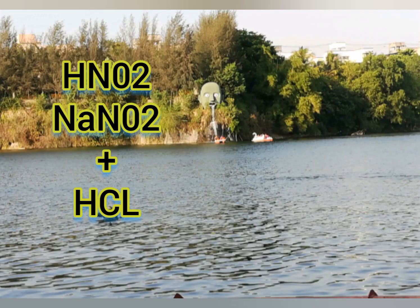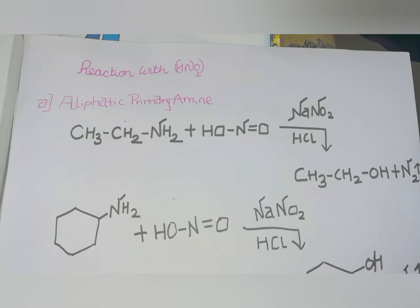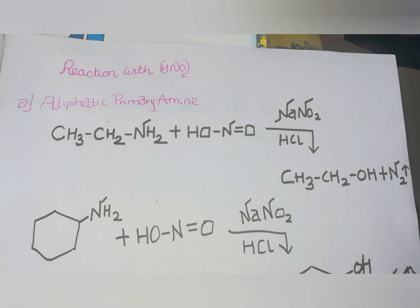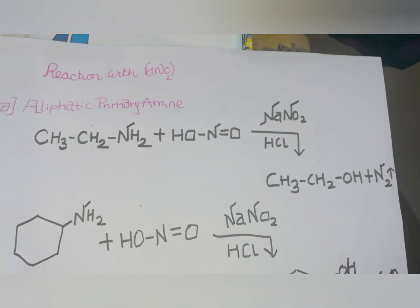The next reagent is nitrous acid, sodium nitrite and hydrochloric acid. Aliphatic primary amine reacts with the nitrous acid and forms an alcohol.